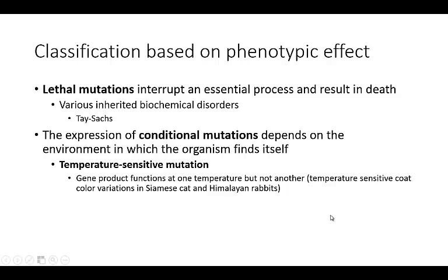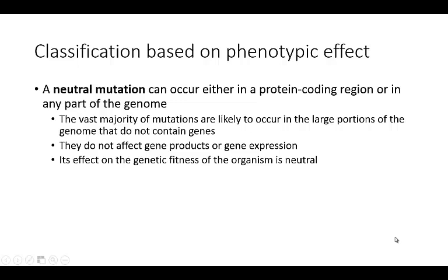A lethal mutation will interrupt an essential process and result in death. There are various inherited biochemical disorders that can lead to this, such as Tay-Sachs, though lethal mutations are mostly studied in organisms like bacteria. The expression of conditional mutations will depend on the environment the organism finds itself in — for example, in a temperature-sensitive mutation, the gene product may function at one temperature but not another, as seen in the temperature-sensitive coat color variations in Siamese cats and Himalayan rabbits. A neutral mutation can occur in a protein-coding region or anywhere in the genome. The vast majority of mutations are likely to occur in portions of the genome between genes, where they may not affect gene products or gene expression, making their overall effect neutral on the organism.